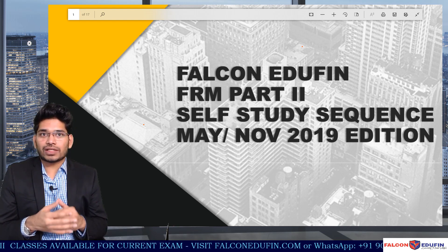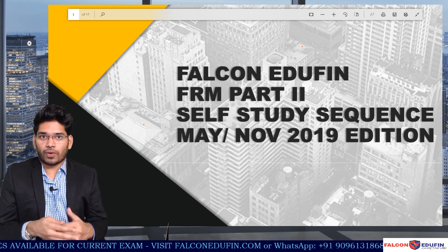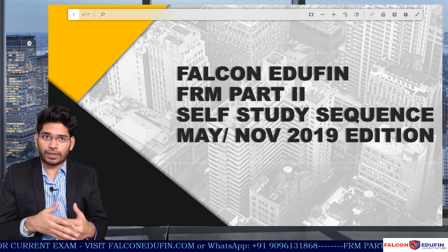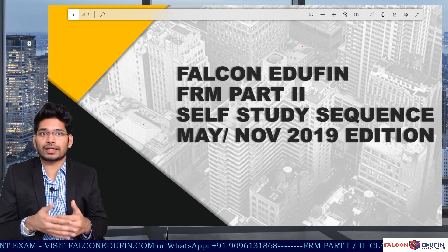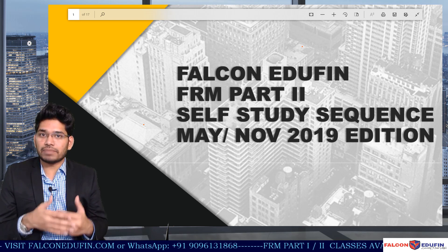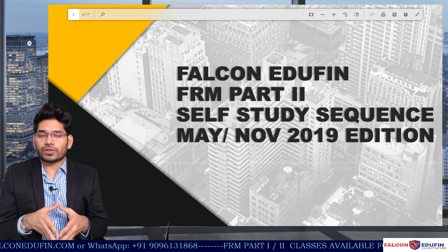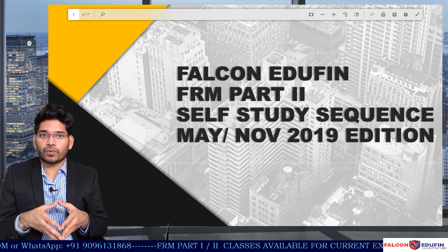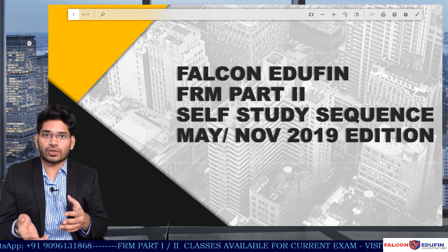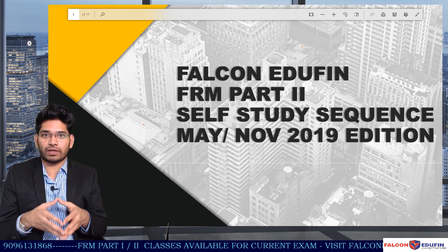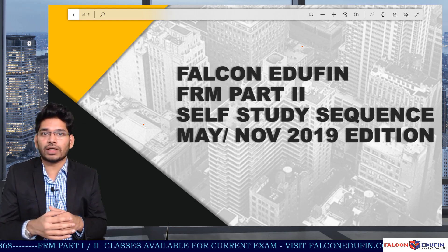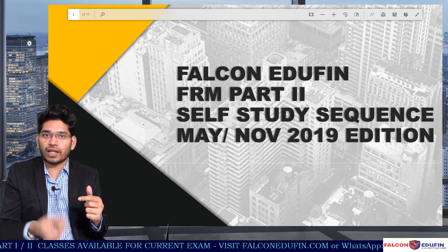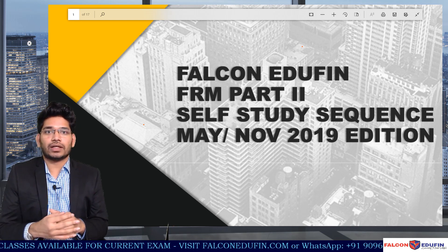Apologies for the delay in publishing this guide. The reason is simple and genuine — the numbering in this guide is as per Schweser, which is not yet available for the 2019 session. We have some additions and deletions in operational risk and current issues that will result in numbering changes. We decided to wait for the new books, but given the demand, we're releasing the existing sequence now and will update the numbering in a few weeks once the new books are out.